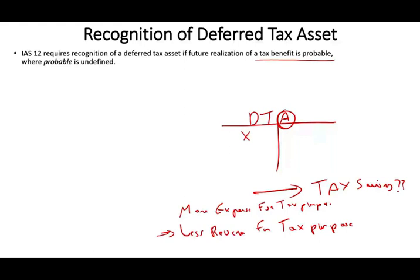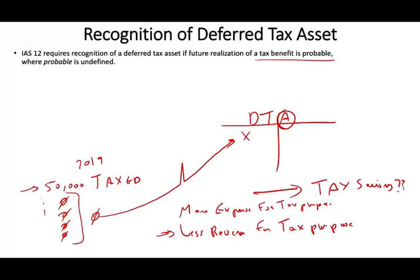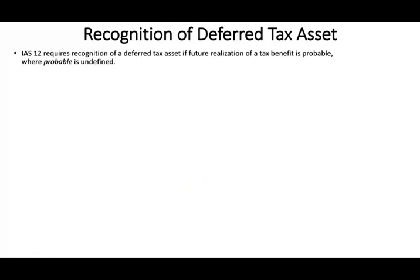Recall the rental example: we received $50,000 upfront and taxed the whole amount in 2019. Since the money was for five years, in the next four years you have zero taxes on that $50,000 of revenue. Because of that, you book a deferred tax asset. But be careful — a deferred tax asset means future savings. If you don't have any taxable income, your future savings won't materialize. You want to make sure you will actually have taxable income, because if you're paying zero taxes, the savings are worthless. You only recognize it when it's realizable.